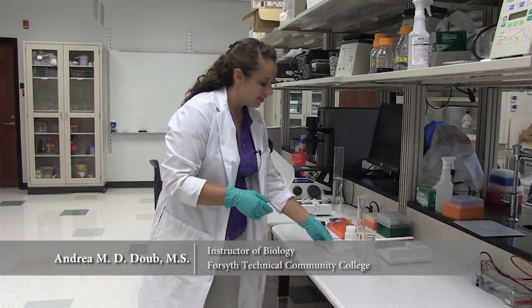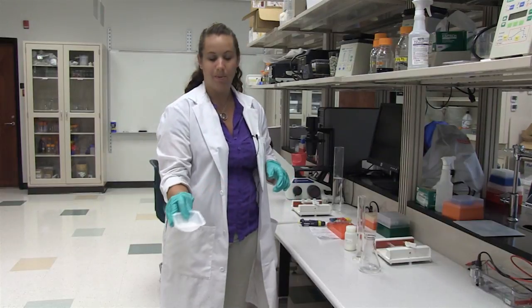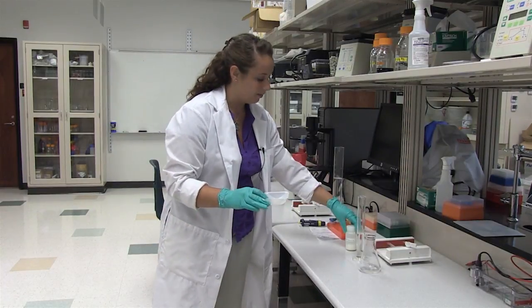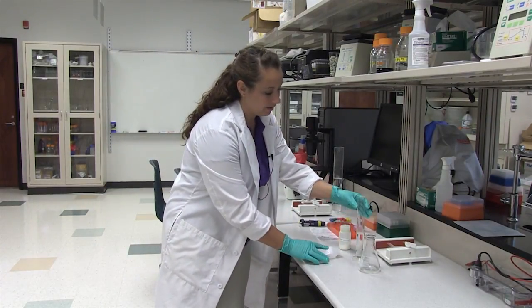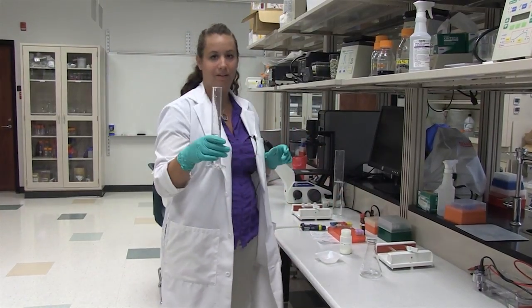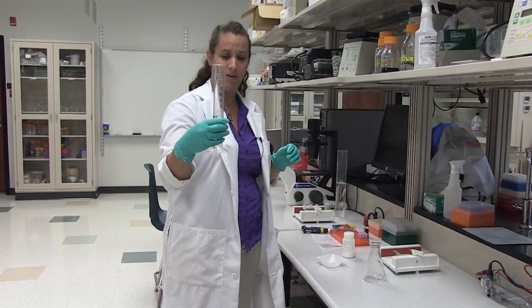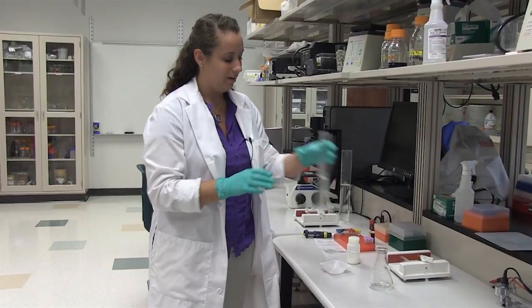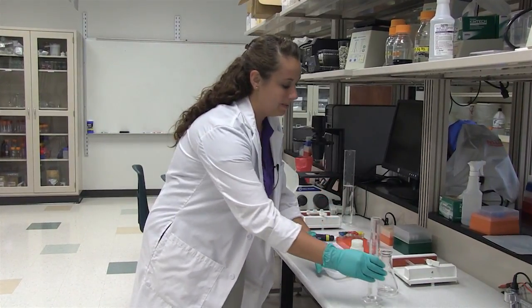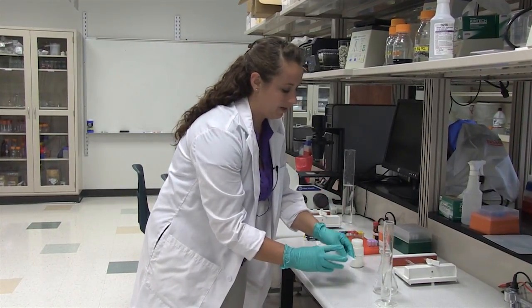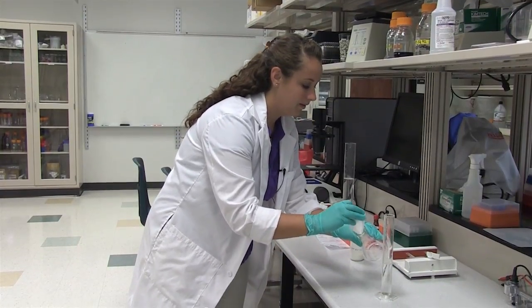So the first thing we need to do is make our 1% agarose gel. We're going to measure 0.4 grams of your pure agarose and we're going to have 40 milliliters of your prepared TAE buffer. We are going to take these and combine them together in a 250 milliliter flask.